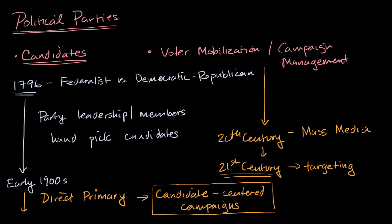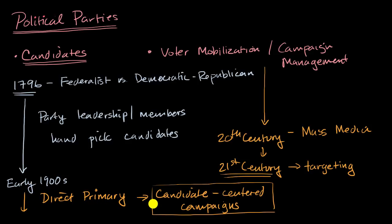The big takeaway here is that political parties have been around for a while in the United States, but they have been evolving. In this video, I'm not even talking about how their platforms have evolved and how their associations have evolved, but this is talking about how they have evolved in terms of picking candidates and how that has changed the nature of campaigns, and also how — primarily through changes in culture and technology — they go about mobilizing and managing campaigns has also changed.